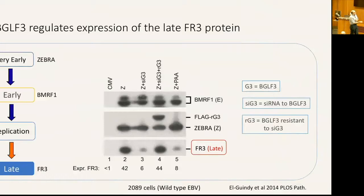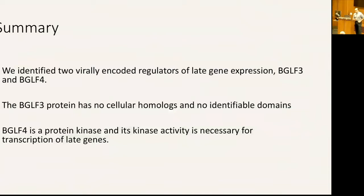To confirm siRNA specificity, we used an siRNA-resistant form of BGLF3 that cannot be degraded by the siRNA, and late gene expression is restored. In summary, we identified two virally encoded proteins — BGLF3 and BGLF4 — and were the first to show that these proteins are regulators of late gene expression. BGLF3 has no identifiable domains, while BGLF4 is a protein kinase.